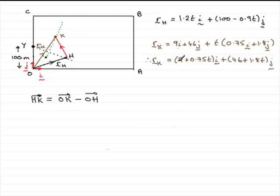So this is essentially this vector minus this vector. So if we do that, we've got 9 plus 0.75t in the i direction. Let's just write this in. 9 plus 0.75t in the i direction minus 1.2t in the i direction. So that's the i component.